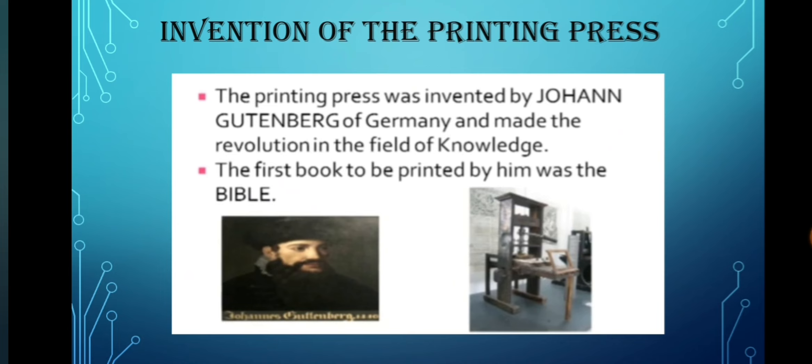Let's study about the invention of the printing press. The printing press was invented by Johan Gutenberg of Germany and made a revolution in the field of knowledge. He used movable metal type to print. The first book printed by him was the Bible, and it was printed on sheep skin.